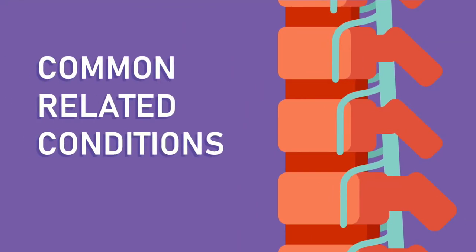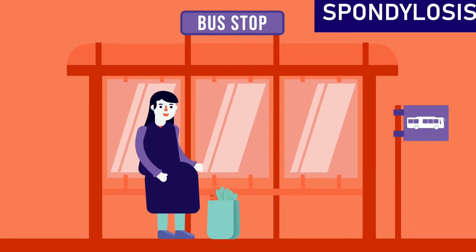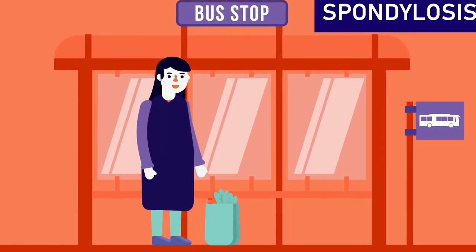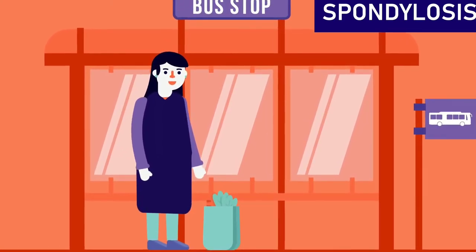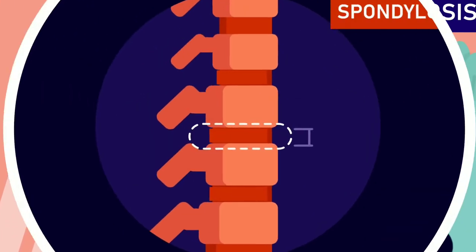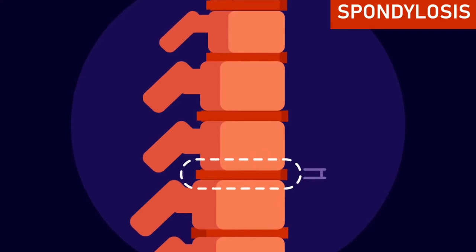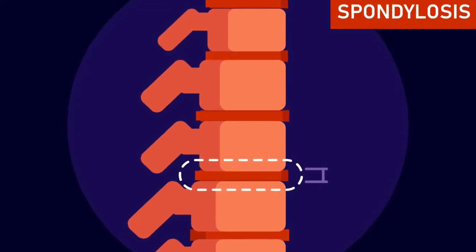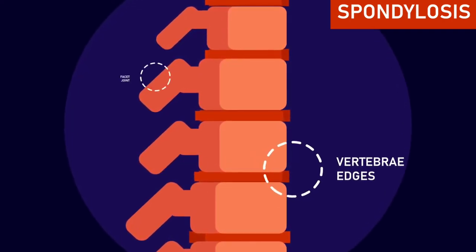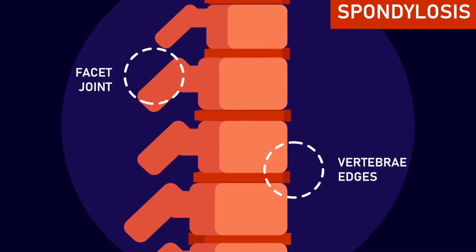Common related conditions: Spondylosis. Your back pain is affected by the wear and tear of the spine. As we get older, the discs inside the spine become thinner, narrowing the gaps between the vertebrae. The condition may be worsened at the edges of the vertebrae and facet joints by the development of bone spurs or osteophytes.